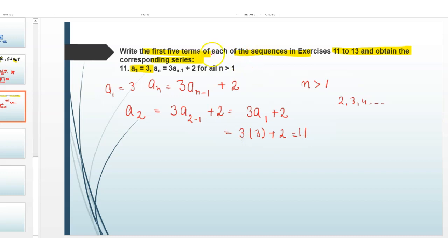Now we have to find the first 5 terms, so put n equals 3. Then a3 equals 3a(3-1) plus 2, which equals 3a2 plus 2, equals 3 times 11 plus 2, equals 35.